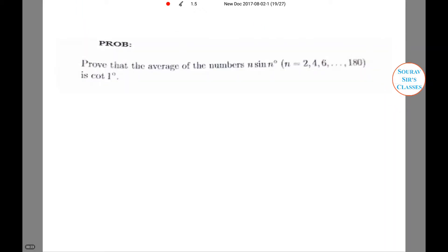The question asks: prove that the average of the numbers n sin n degrees, where n equals 2, 4, 6, up to 180, is cot 1 degree.